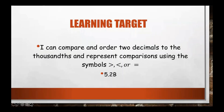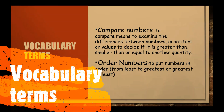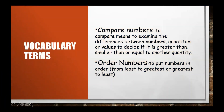Our learning target for today is: I can compare and order two decimals to the thousandths and represent comparisons using symbols — greater than, less than, or equals. That's standard 5.2b. Our vocabulary terms for today are 'compare numbers' and 'order numbers.' Compare numbers means to examine the differences between numbers, quantities, or values to decide if one is greater than, smaller than, or equal to another. Order numbers means to put numbers in order from least to greatest or greatest to least.